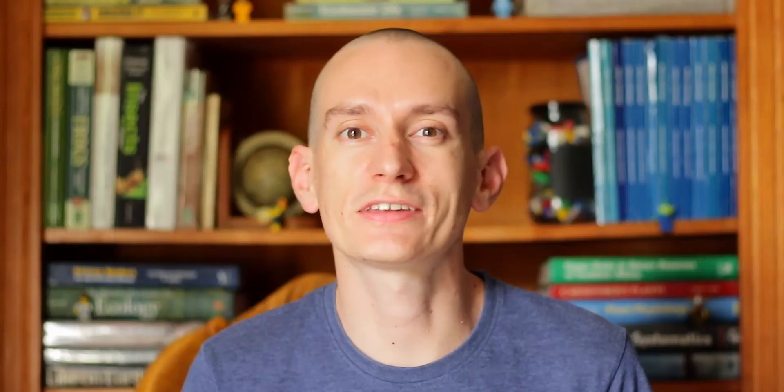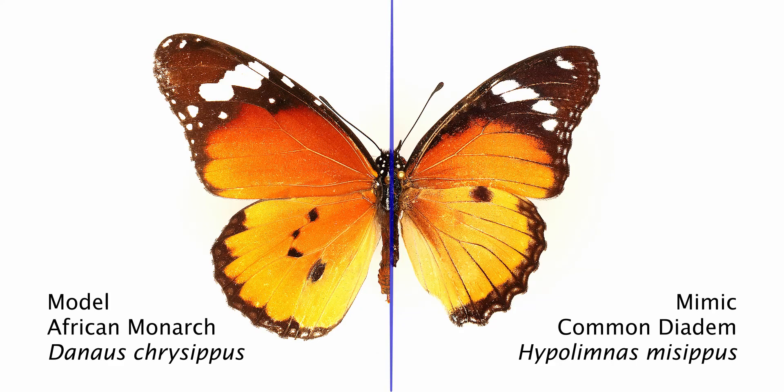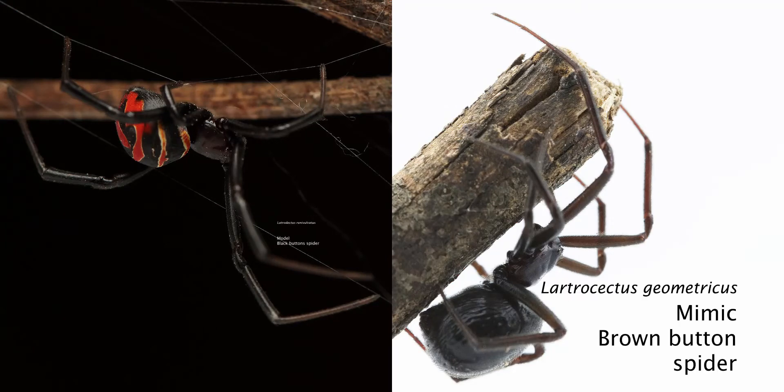There are three different types of defensive mimicry. The first one is Batesian mimicry, when a harmless mimic pretends to be a harmful model. The second one is Müllerian mimicry, when two harmful species look very similar. And the last one is very rare — this is Mertensian mimicry, where a deadly species mimics a less deadly and very good lesson-teaching model.